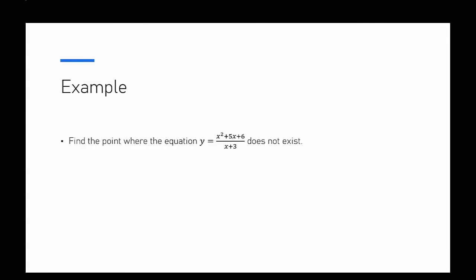The second example is to find the point where the equation y equals x squared plus 5x plus 6, divided by x plus 3, does not exist. This might not be something you've looked at before, but it will definitely come up later in senior school and it's a really interesting problem.